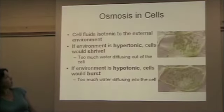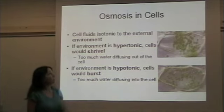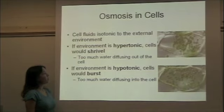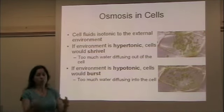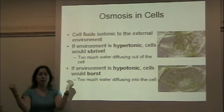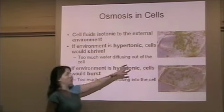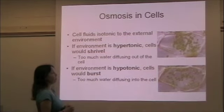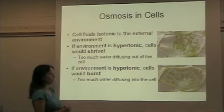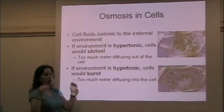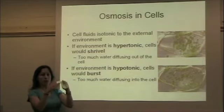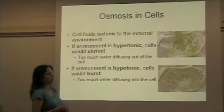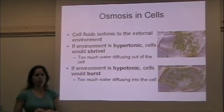How does this affect our cells? Cell fluids like to be isotonic to the external environment. If the environment outside the cell is hypertonic, the cell is going to shrink — all the water is going to leave the cell and the organelles become jumbled together in the center. If the cell is put in a hypotonic environment, all the water from outside is going to rush into the cell, and the cell is going to swell and potentially burst. So it's really important that the cell maintains isotonic conditions.